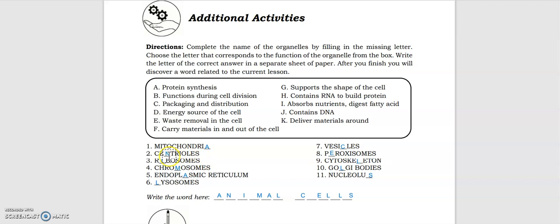Okay, mitochondria, so A is what we should put. Then centrioles, ribosomes, chromosomes, endoplasmic reticulum, lysosomes, vesicles, peroxisomes, cytoskeleton, Golgi bodies, nucleolus. So the word is animal cells.